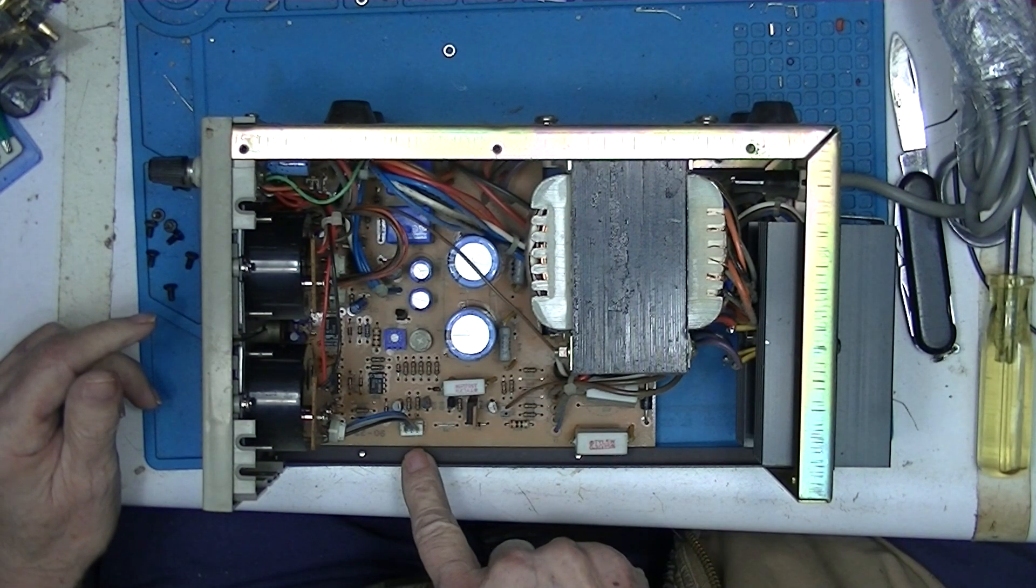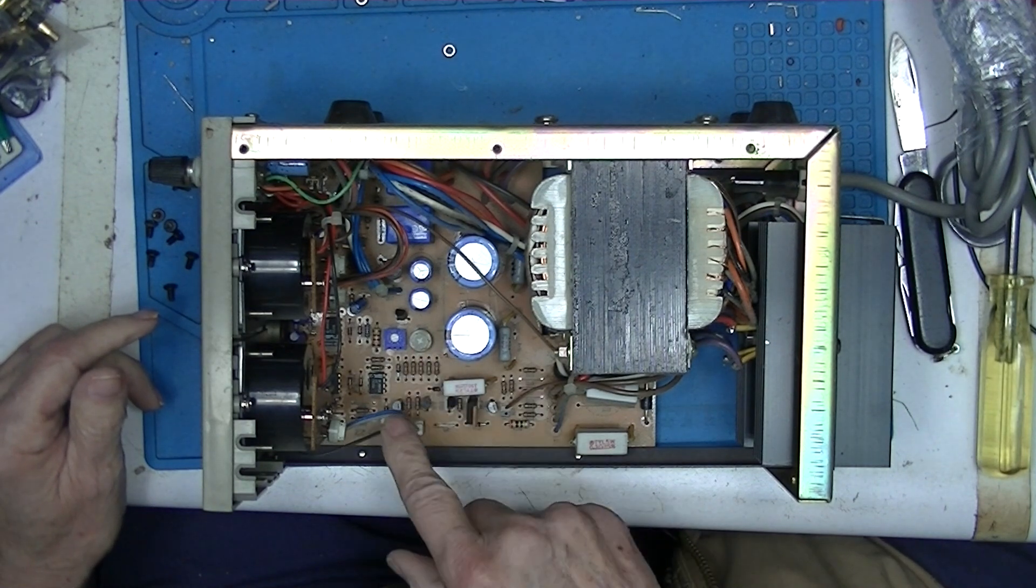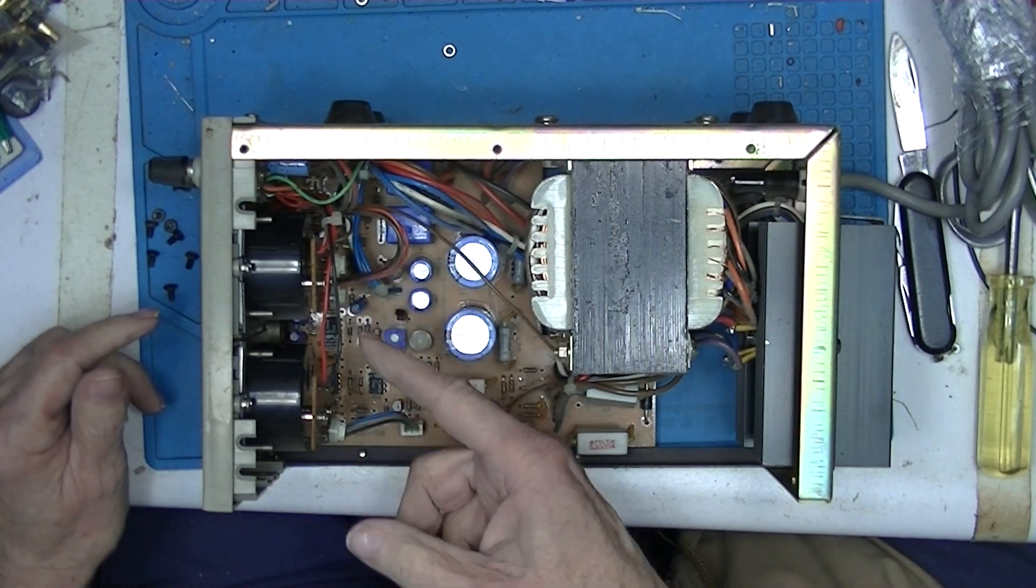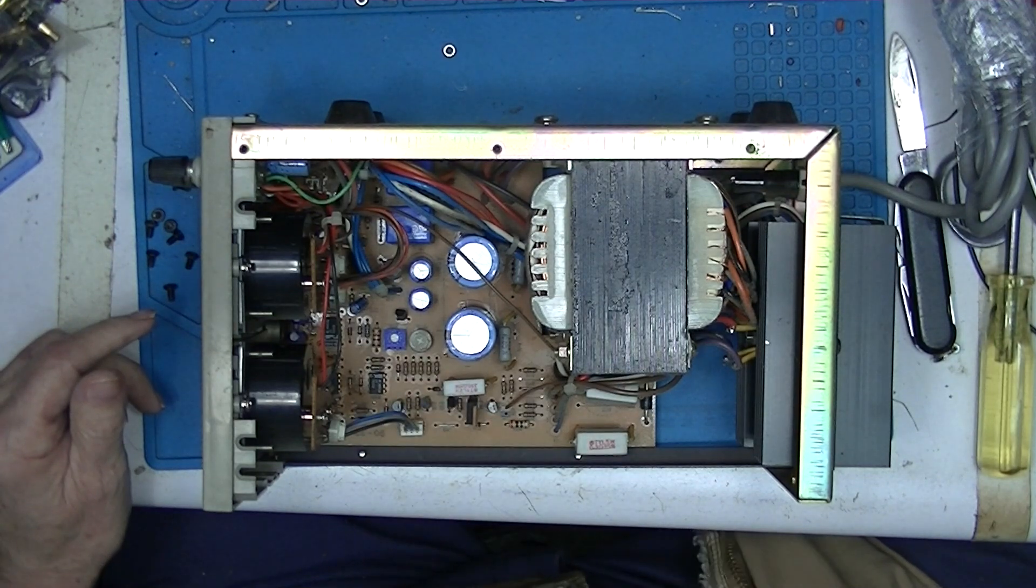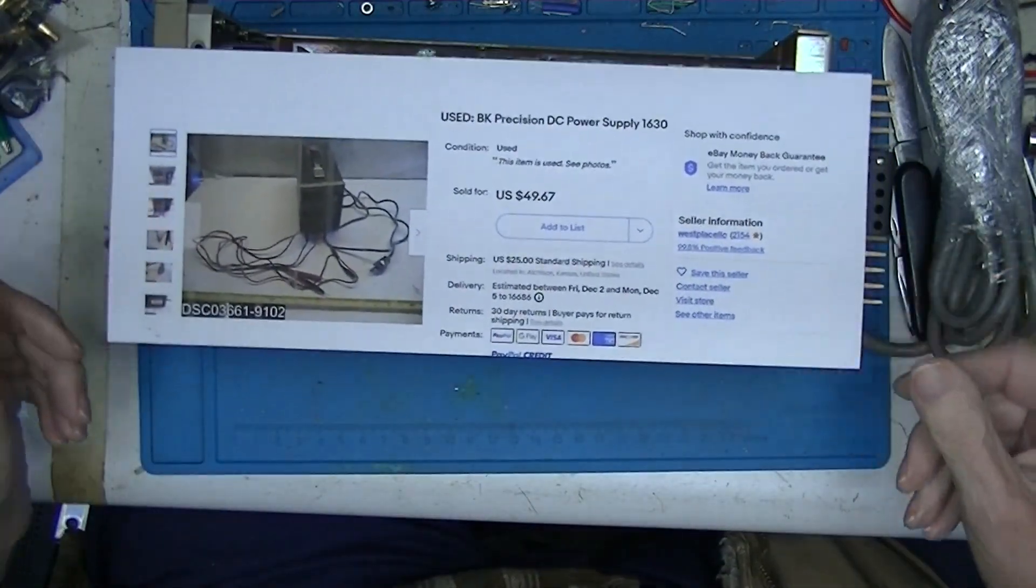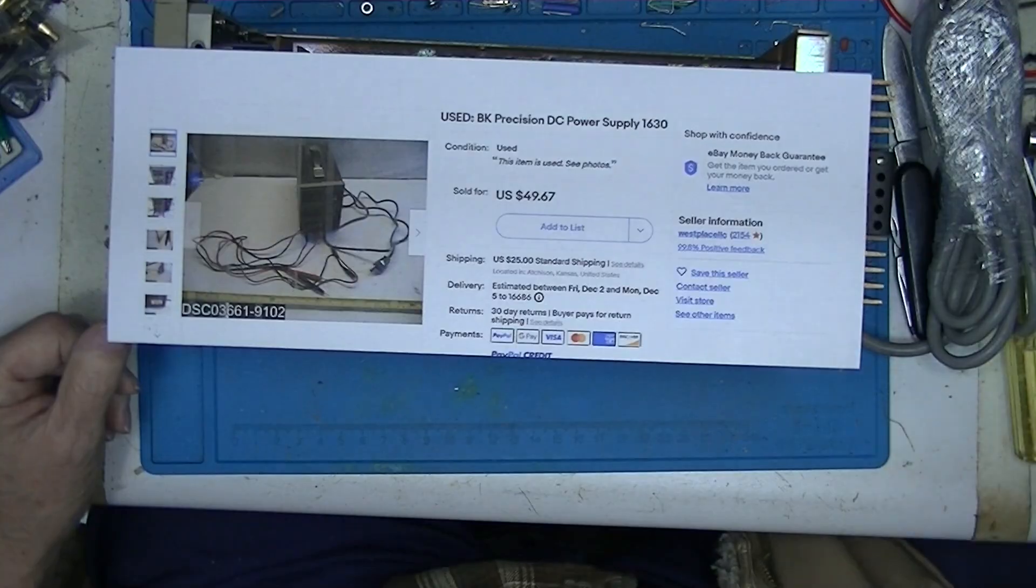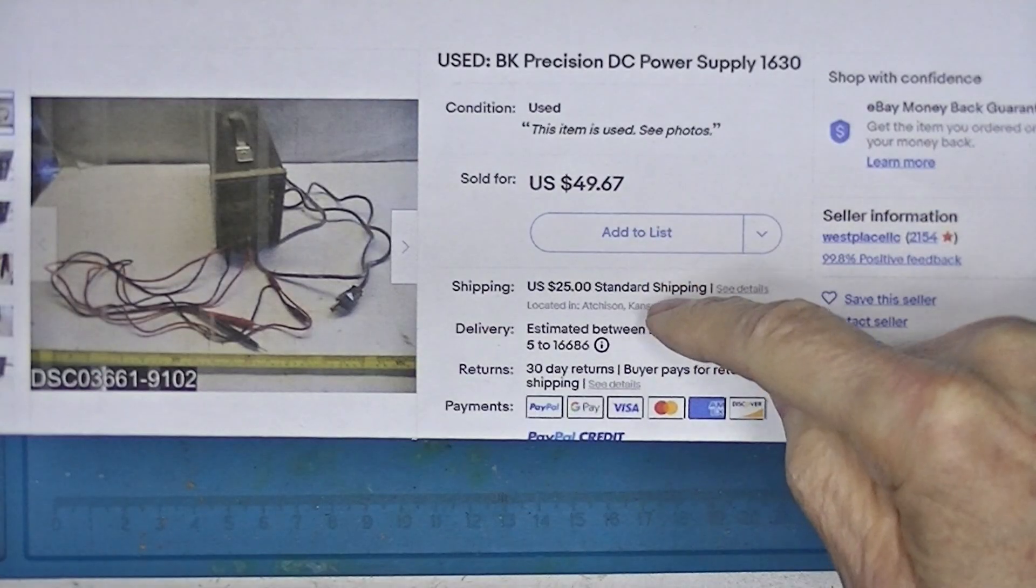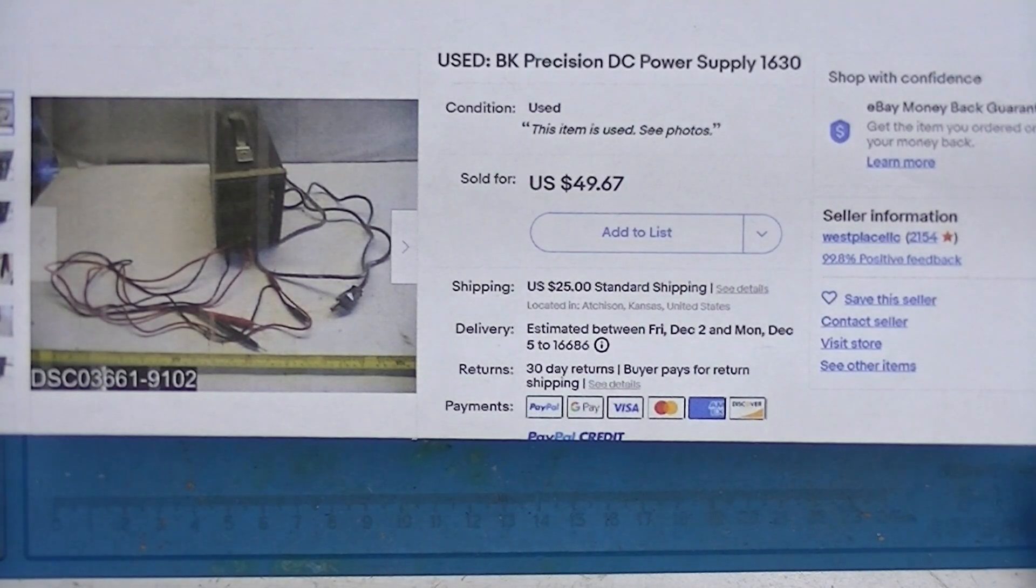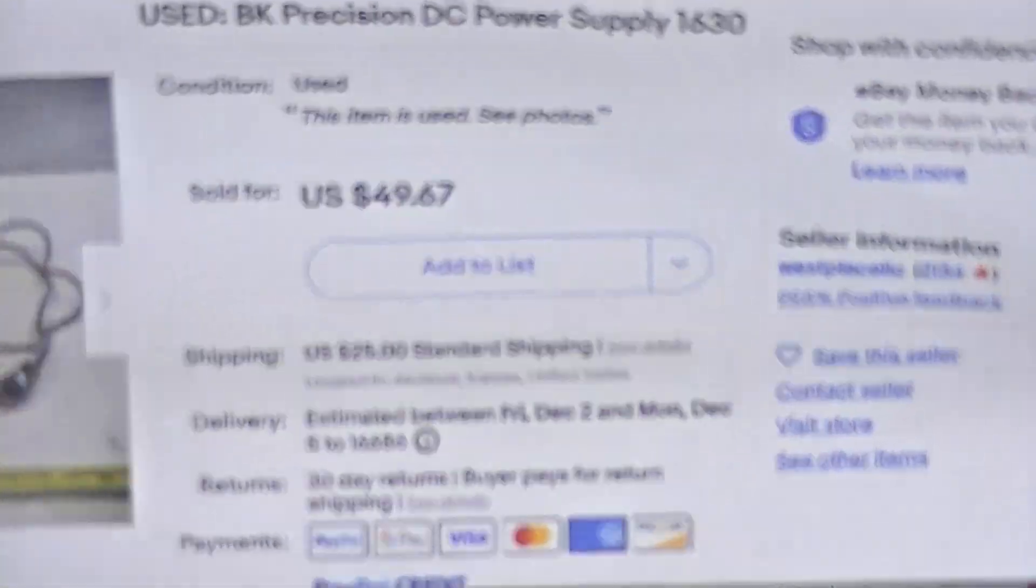Couple of adjustments here, under here, here, here, here, and here. I bought this on eBay, so I paid $50 and $25 shipping - $75 for this power supply. I bought it from this fellow, West Place LLC.